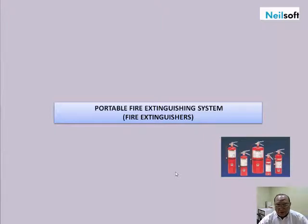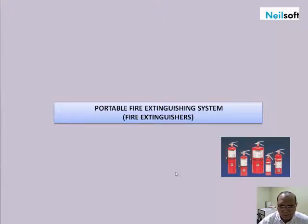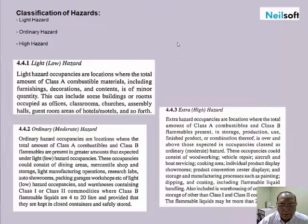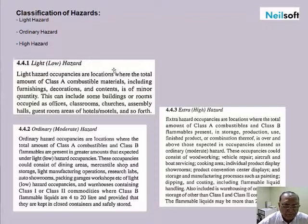Fire extinguishers are rated as per the type of fire, and are also a first aid fire protection system that can be operated by occupants. The type of fire applicable is marked on the extinguisher itself. ABC fire extinguishers cover all three fire classes: Class A for combustible materials like papers, Class B for flammable liquids, and Class C for electrical fires.